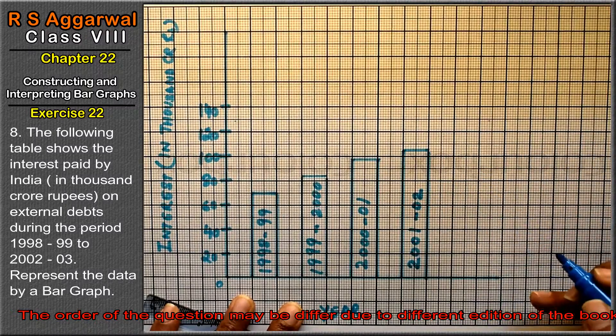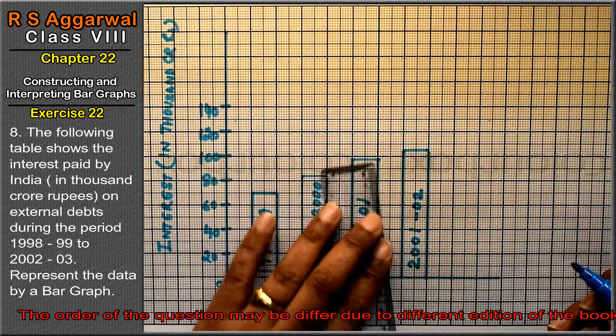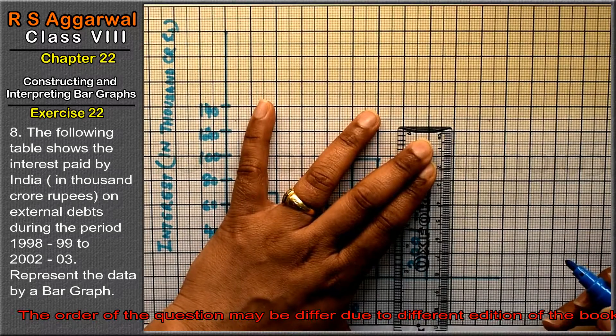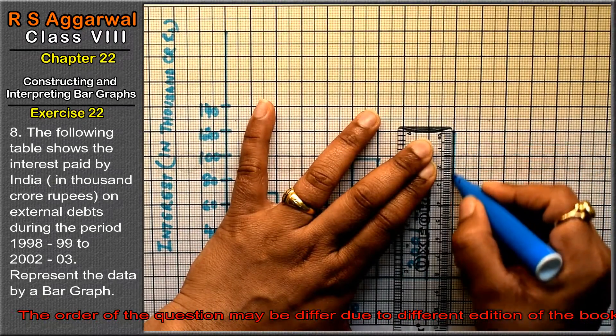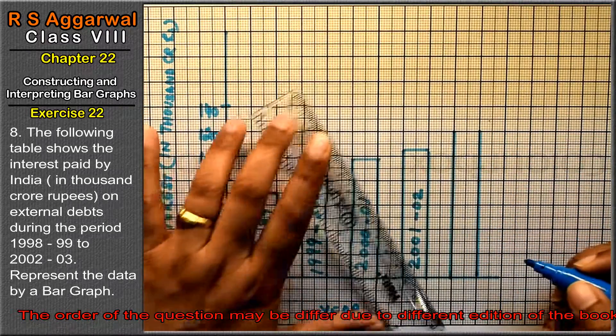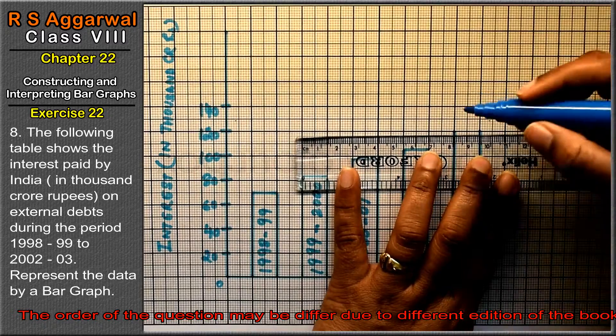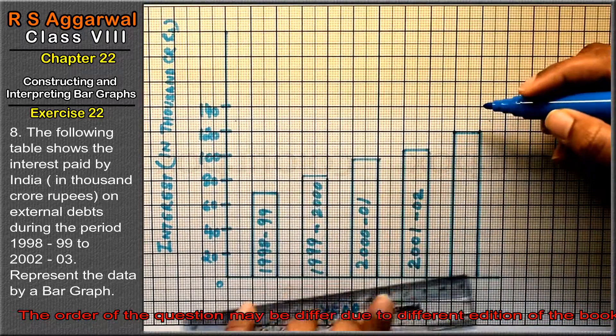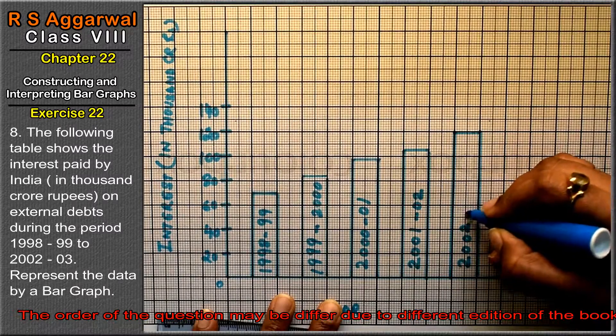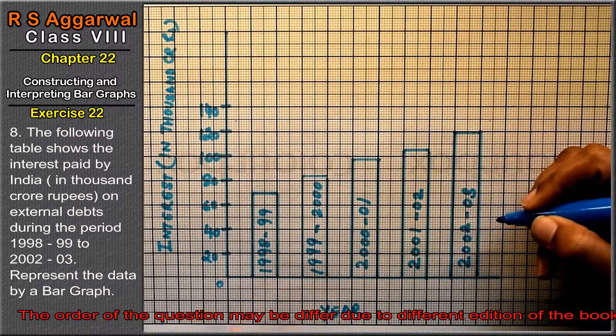Next is 120, which is 60 divisions. See here our 60 divisions up to 2002 to 2003.